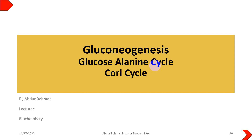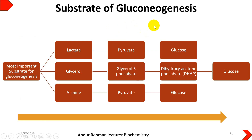Hello viewers, you are watching Students Diary and this is Abdur Rahman. Today we will discuss some subtopics of gluconeogenesis: the glucose-alanine cycle and the Cori cycle. We know that gluconeogenesis is the formation of glucose molecules from non-carbohydrate precursors, which could be lactate, glycerol, or alanine. Lactate will be converted into pyruvate, which will then result in glucose formation.